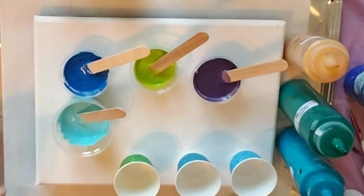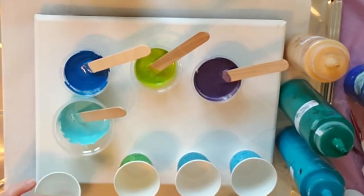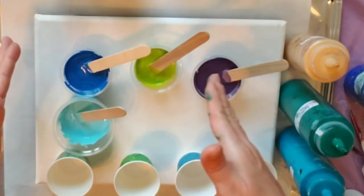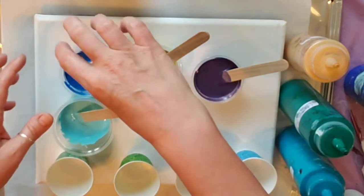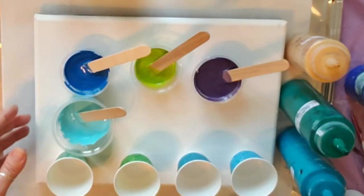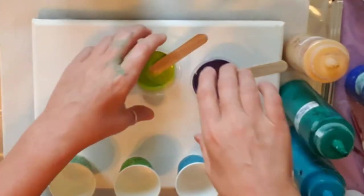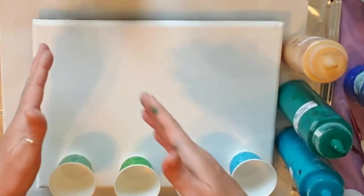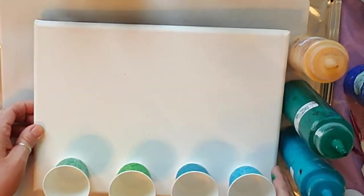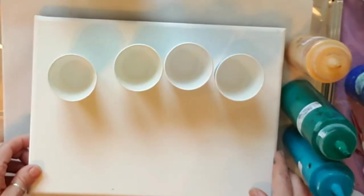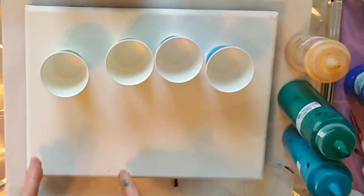Alright, so today I am going to do a flip cup sandwich pour where I have four cups lined up with colors and then flip them and drag them across the canvas. You do not tilt the canvas this way, you only tilt it back and forth this way so that it has even lines across.